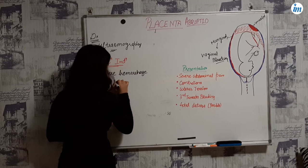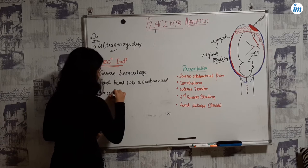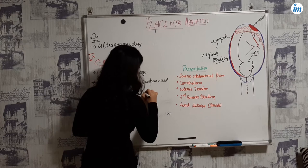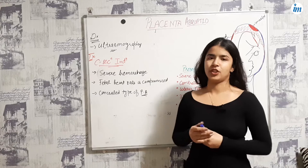So the indications for C-section are: fetal heart rate is compromised, severe hemorrhage, and if it is the concealed type of placenta abruptio.